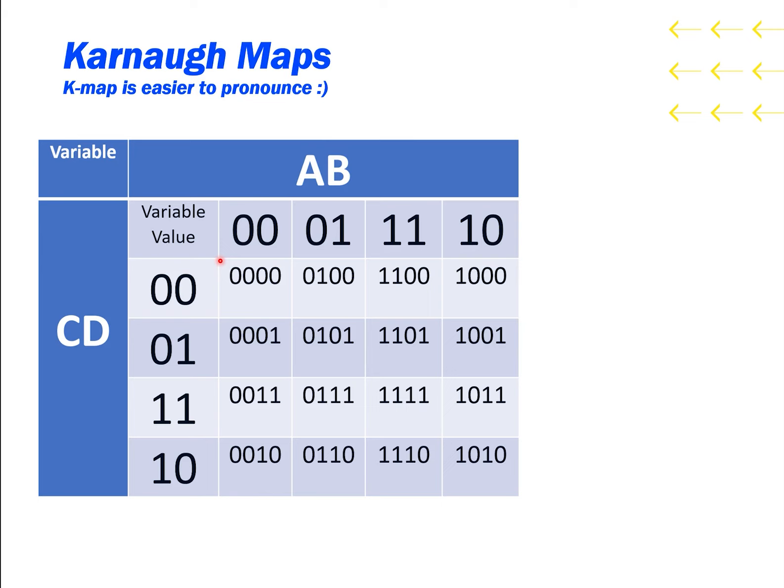I'll get more into reading these on the next slide, but for now, recognize that this grid here of tiles has all the different combinations of inputs. And that each combination tile is connected to other tiles that differ by only one variable. This will help us simplify later.